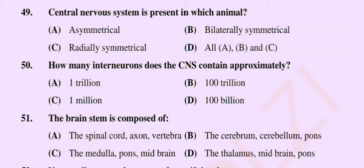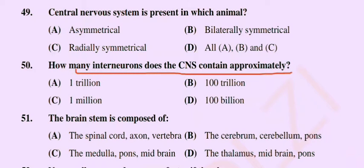Question number 50: How many interneurons does the central nervous system contain approximately? Option A: 1 trillion, option B: 100 trillion, option C: 1 million, option D: 100 billion. The correct option is option D: 100 billion.